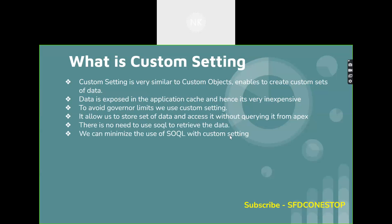Now let's understand what is custom setting. Custom setting is also very similar to custom objects, wherein it enables you to create custom sets of data. In custom metadata, the records are also the metadata, whereas in custom setting, the records are the actual data. So whenever you do the deployment of custom settings, you can only deploy the custom settings themselves. If you wanted to do the deployment of the data, that is not possible. You need to upload the data after deployment as part of the post deployment activity. That is one of the major differences.